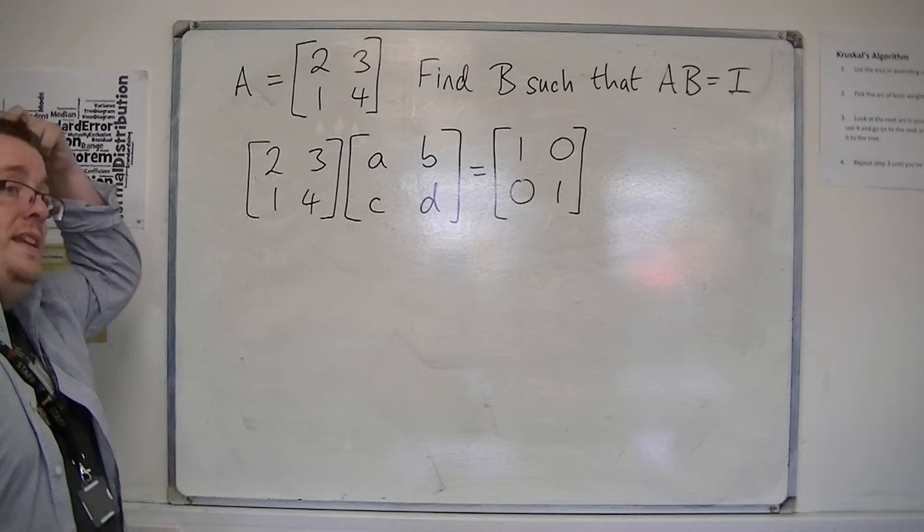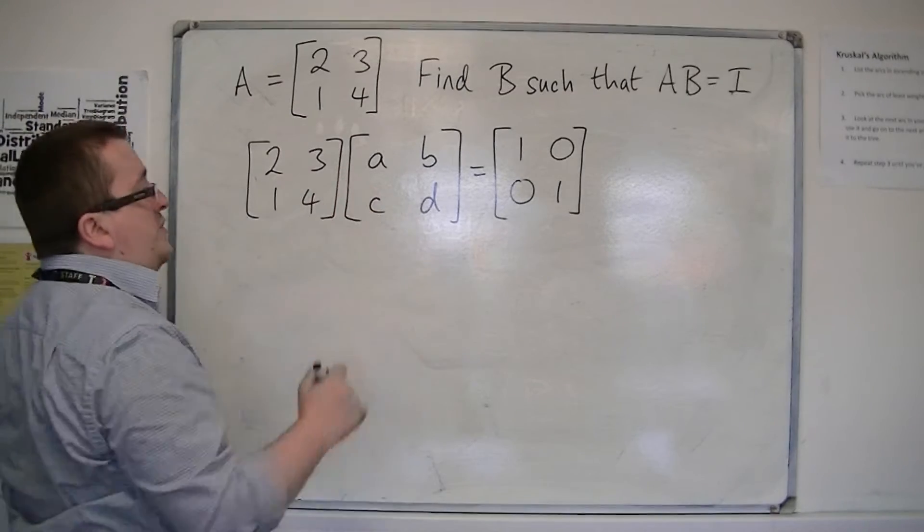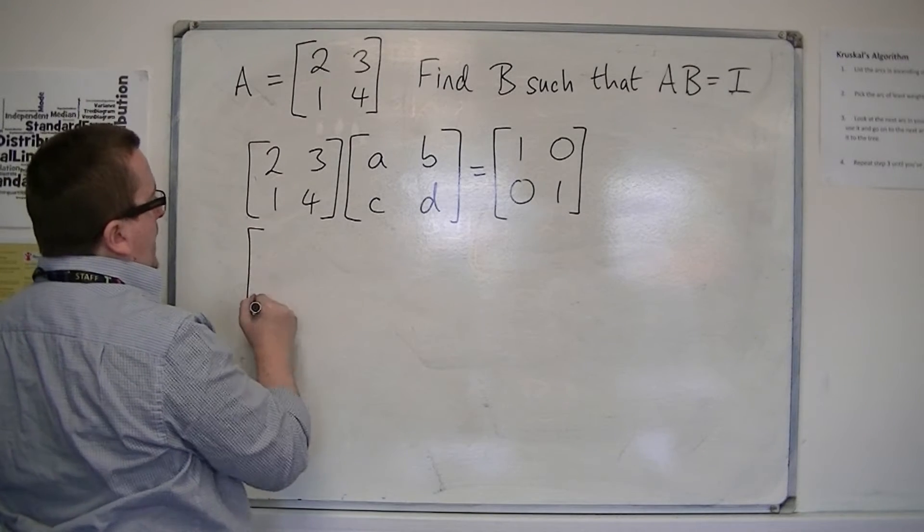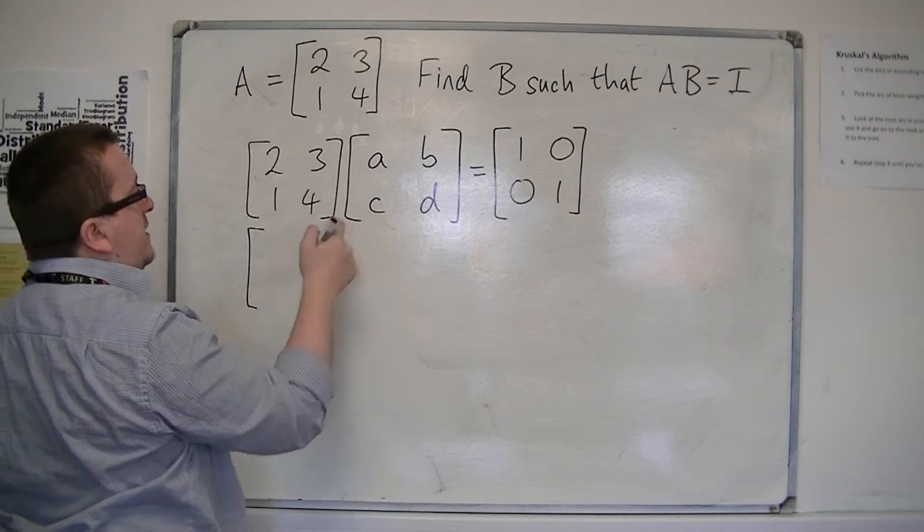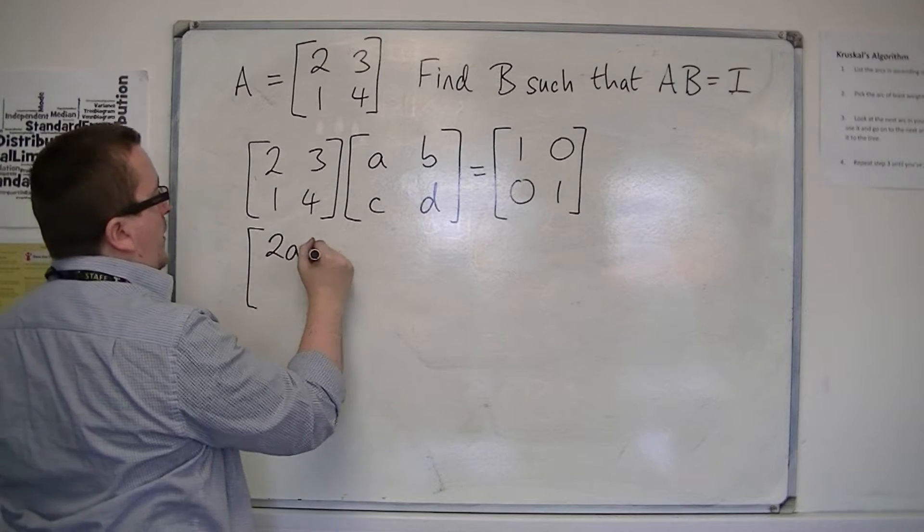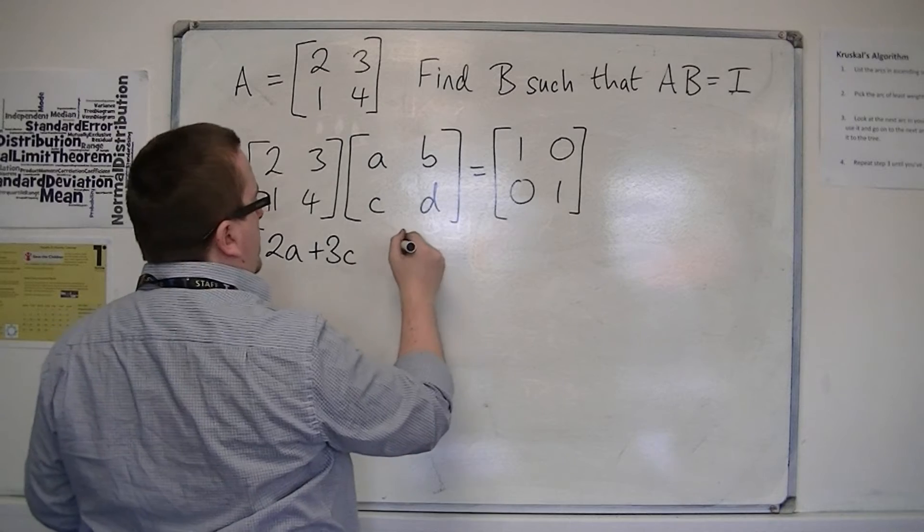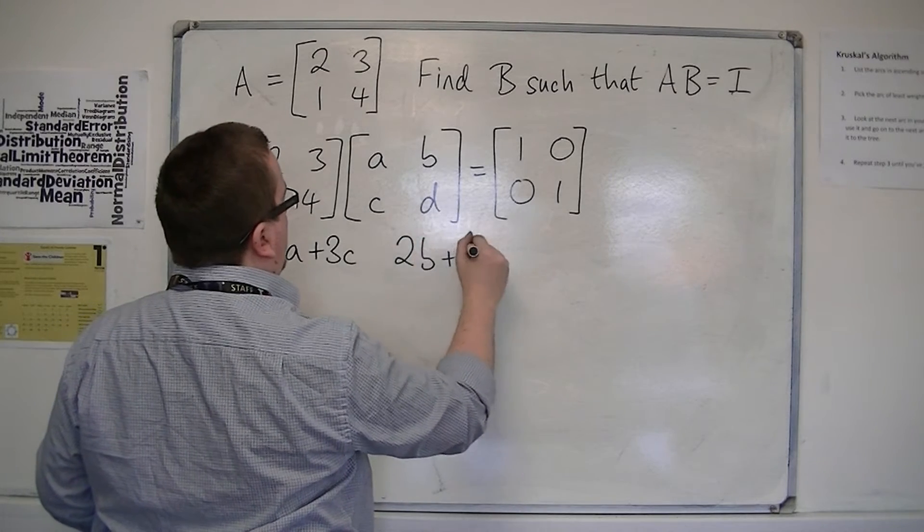So what I need to do is multiply these two matrices together. What's going to happen is I'm going to get 2 times a, 3 times c, so 2a plus 3c. I'm going to get 2 times b, 3 times d, so 2b plus 3d.